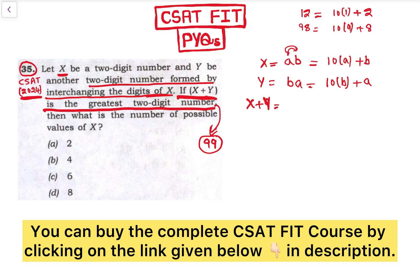So if we are adding X plus Y here, it is 10a plus a, that is 11a, plus 10b plus b, that is 11b. So 99 is equal to 11 into (a plus b).